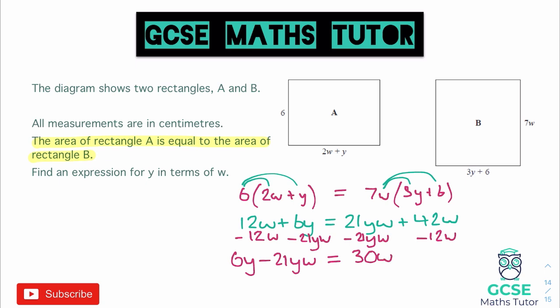Now we have to figure out how we're going to make Y on its own, because there's currently two Y's - you've got a Y here and a Y here. To make that into one Y, we're going to use factorisation. I'm going to factorise Y out of the left hand side. If we do that, we're going to have Y times 6 minus 21W, and that equals 30W. Now we're almost done. Our final step to make Y the subject is we're just going to divide by the bracket, so divide both sides by 6 minus 21W.